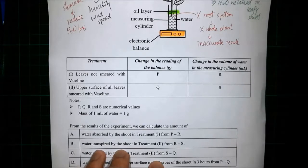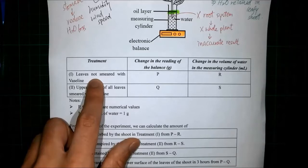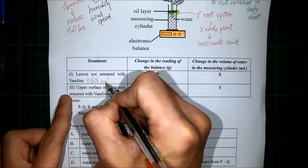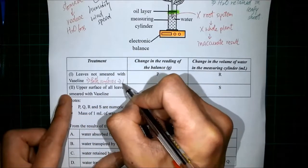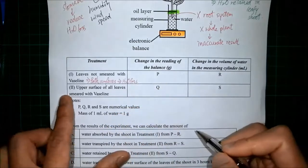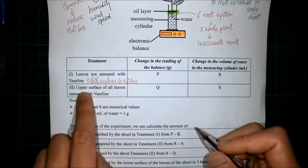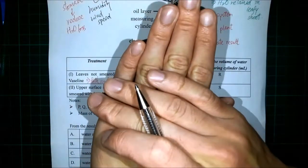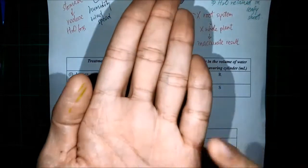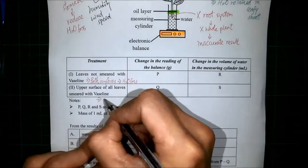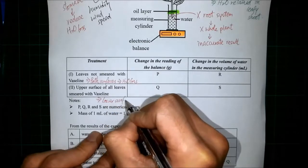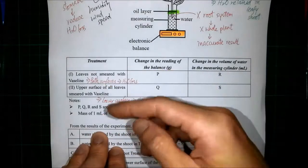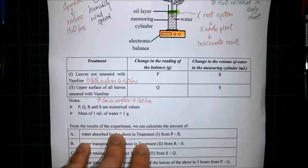From the table, Treatment 1 has leaves not smeared with vaseline, meaning both surfaces of the leaves can carry out transpiration — water loss can occur from both surfaces. Treatment 2 has the upper surface of all leaves smeared with vaseline, but the lower surface is clear. So for Treatment 2, only the lower surface will lose water.